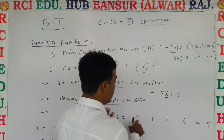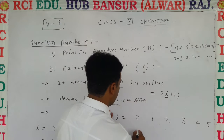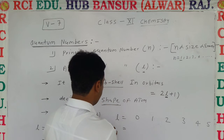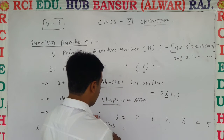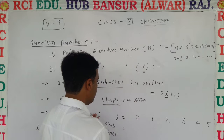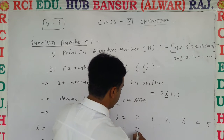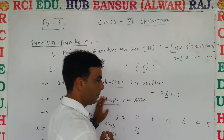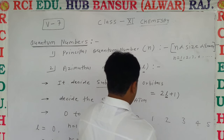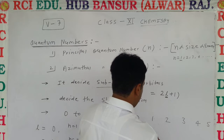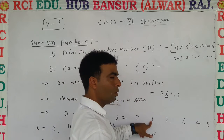If l = 0, that sub-cell is called s — where s means spherical. If l = 1, it is the p sub-cell.